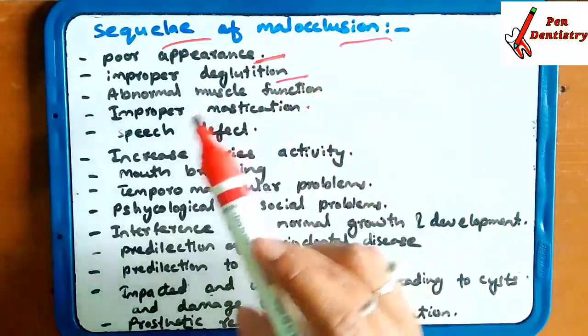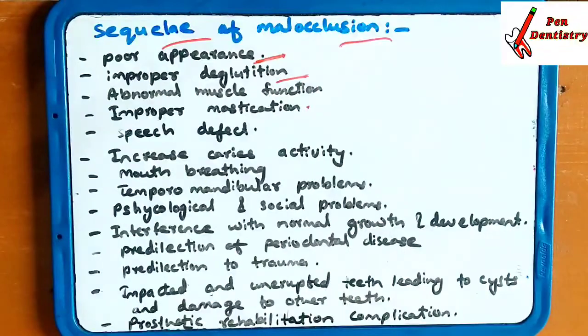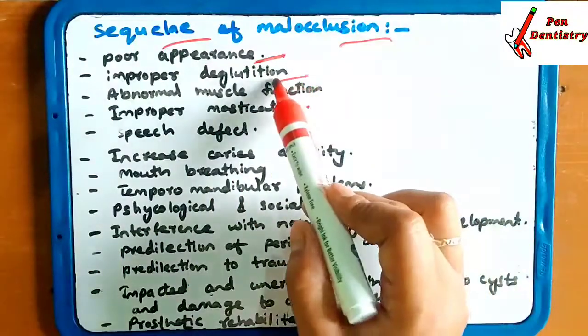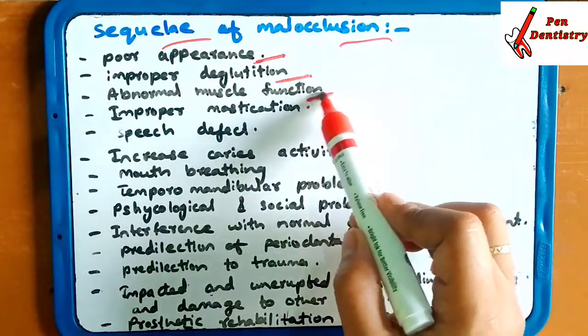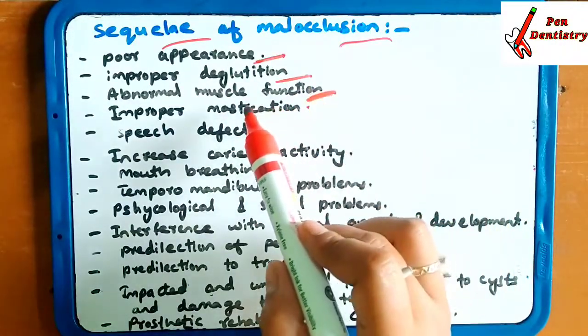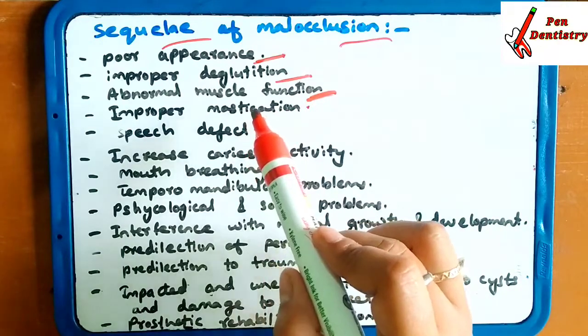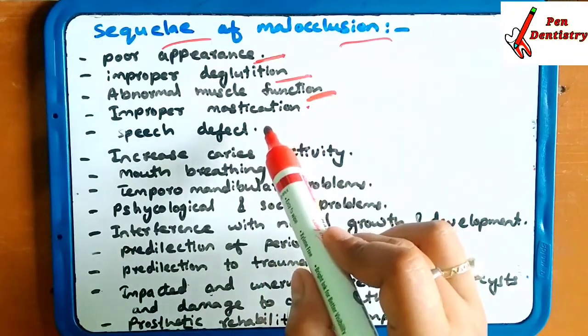Improper deglutition — the patient is not able to swallow the food properly. Abnormal muscle function — the muscle functions are abnormal.